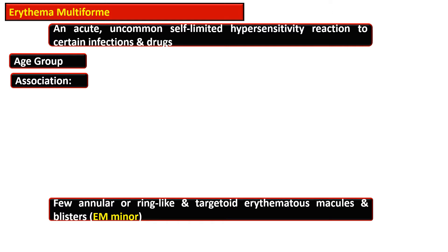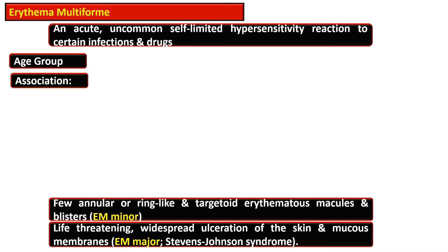There are two forms of this disease. One is termed erythema multiforme minor, which features few annular or ring-like targetoid erythematous macules or blisters. Erythema multiforme major, also termed Stevens-Johnson syndrome, is characterized by widespread ulceration of the skin and mucous membranes and is a life-threatening condition.